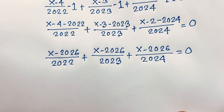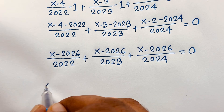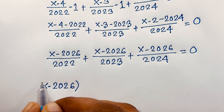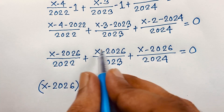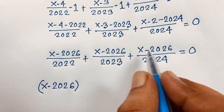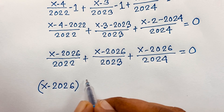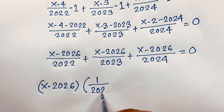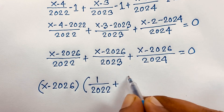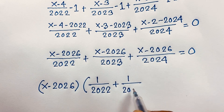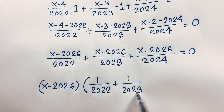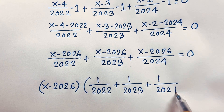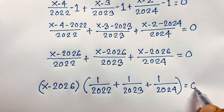Notice that (x minus 2026) is common in all three terms. Factoring it out, we get (x minus 2026) times (1 over 2022 plus 1 over 2023 plus 1 over 2024) equals 0.